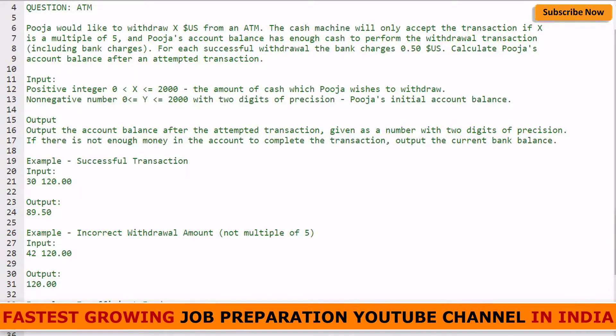So let's begin. This question is named ATM. Pooja would like to withdraw X US dollars from an ATM. The cash machine will only accept the transaction if X is a multiple of five, and Pooja's account balance has enough cash to perform the withdrawal transaction including bank charges. This is an important point you should note - for each successful withdrawal, the bank charges 50 cents.